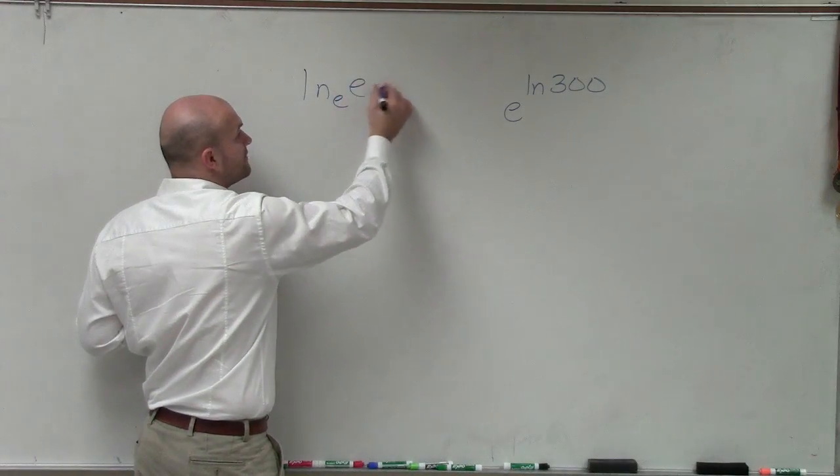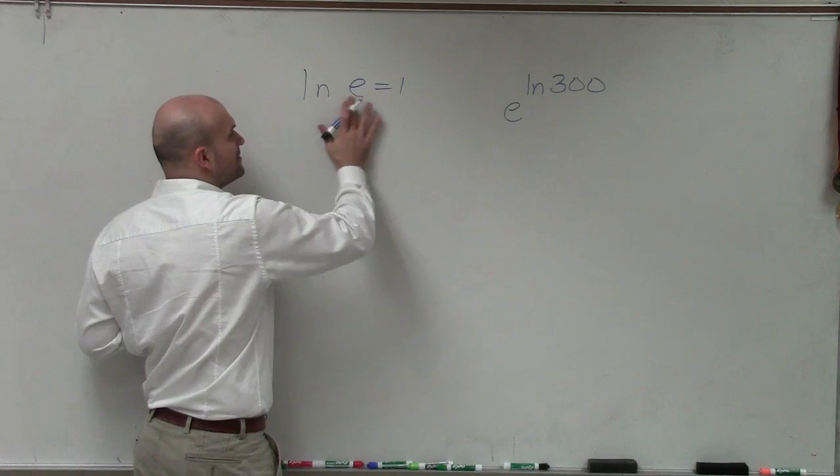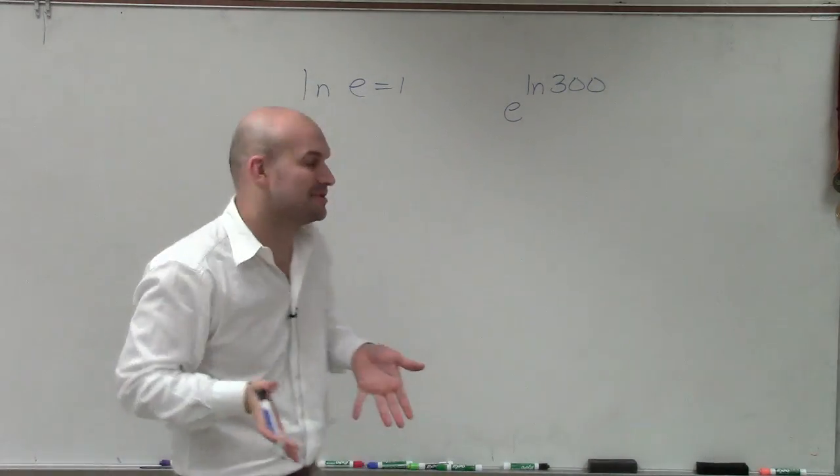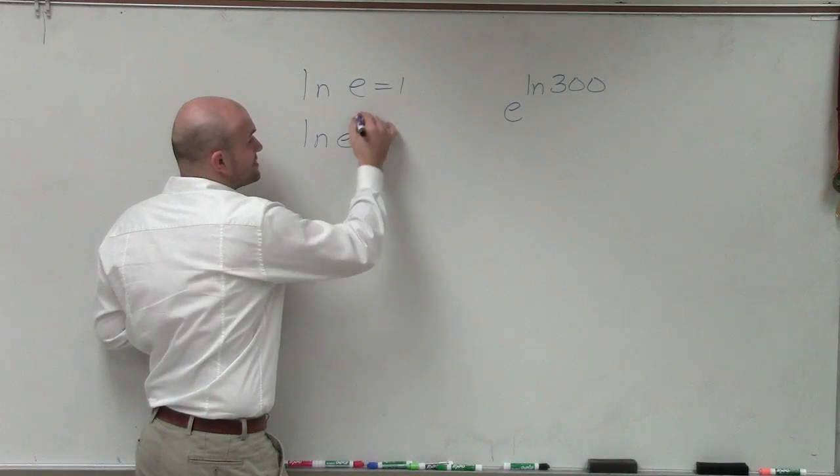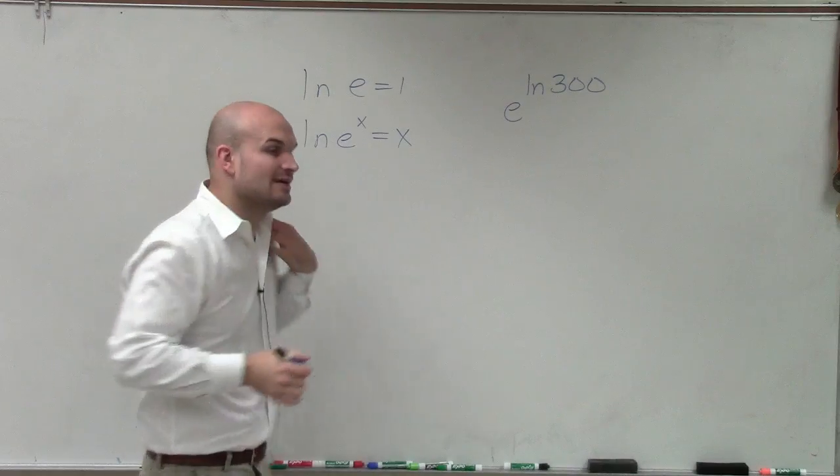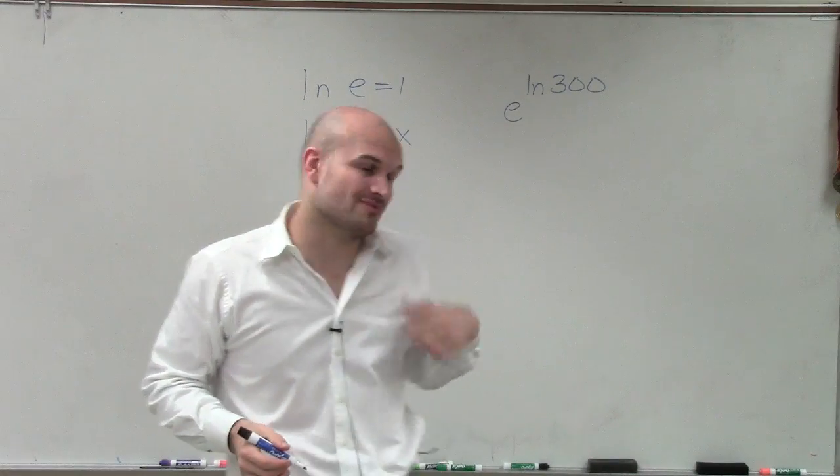e, a base e of e, we know is equal to 1. Remember that ln always has your base e, so we usually commonly do not write it in there. But then if I have ln of e raised to an x, that will therefore just equal whatever power it's raised to.